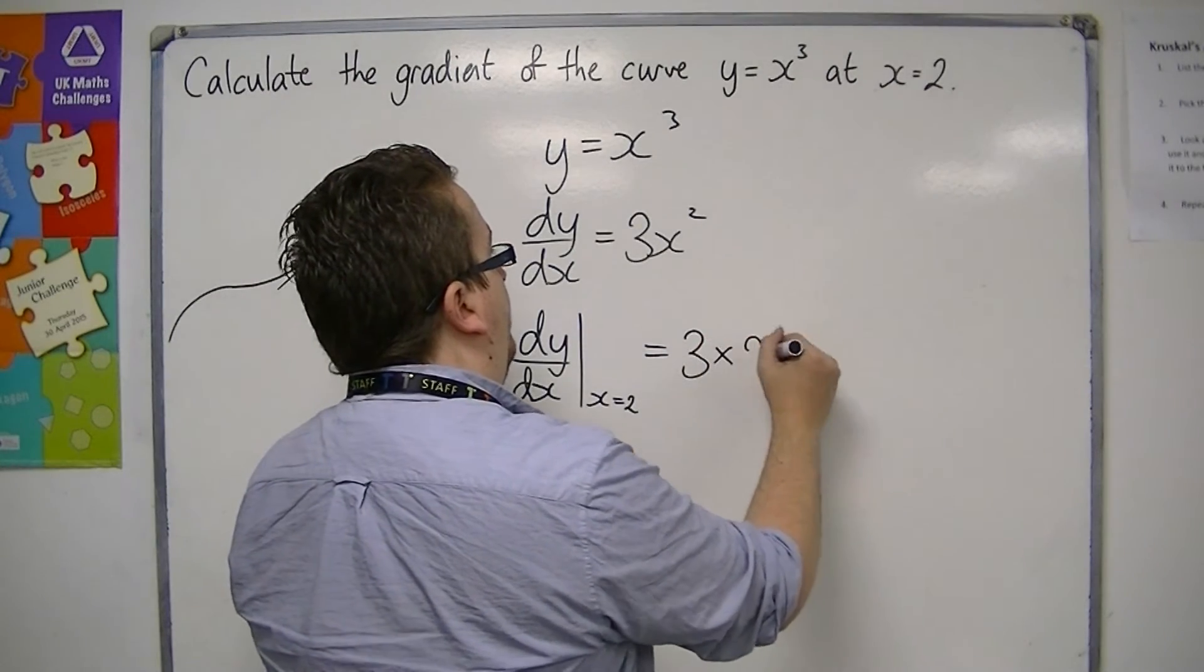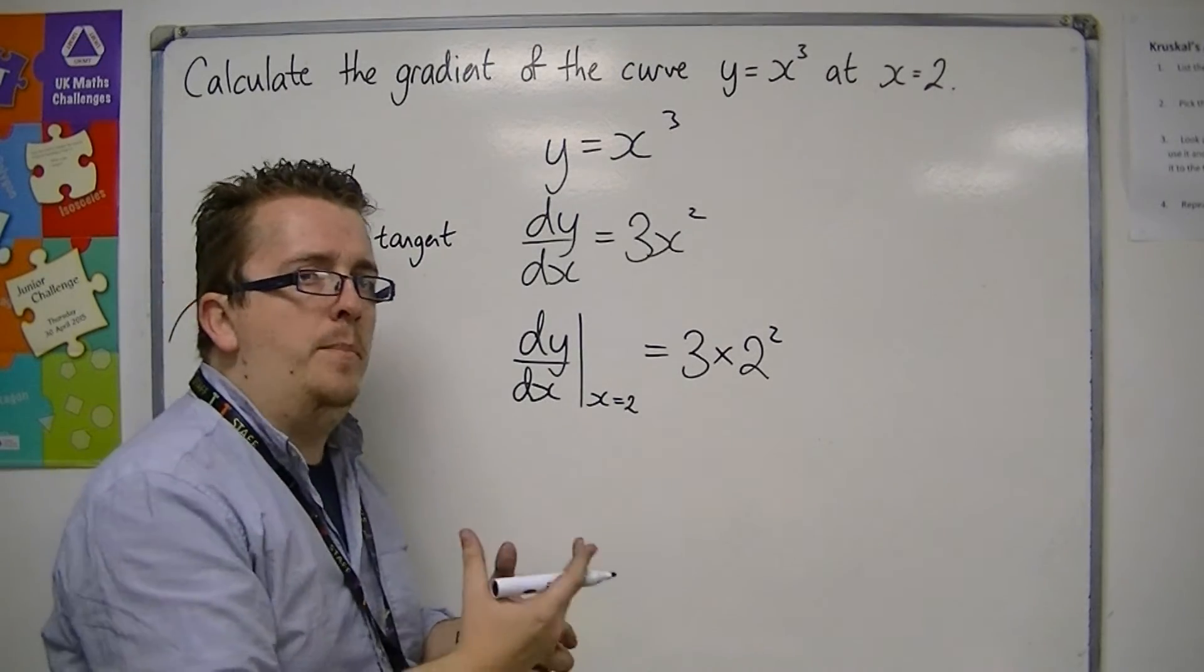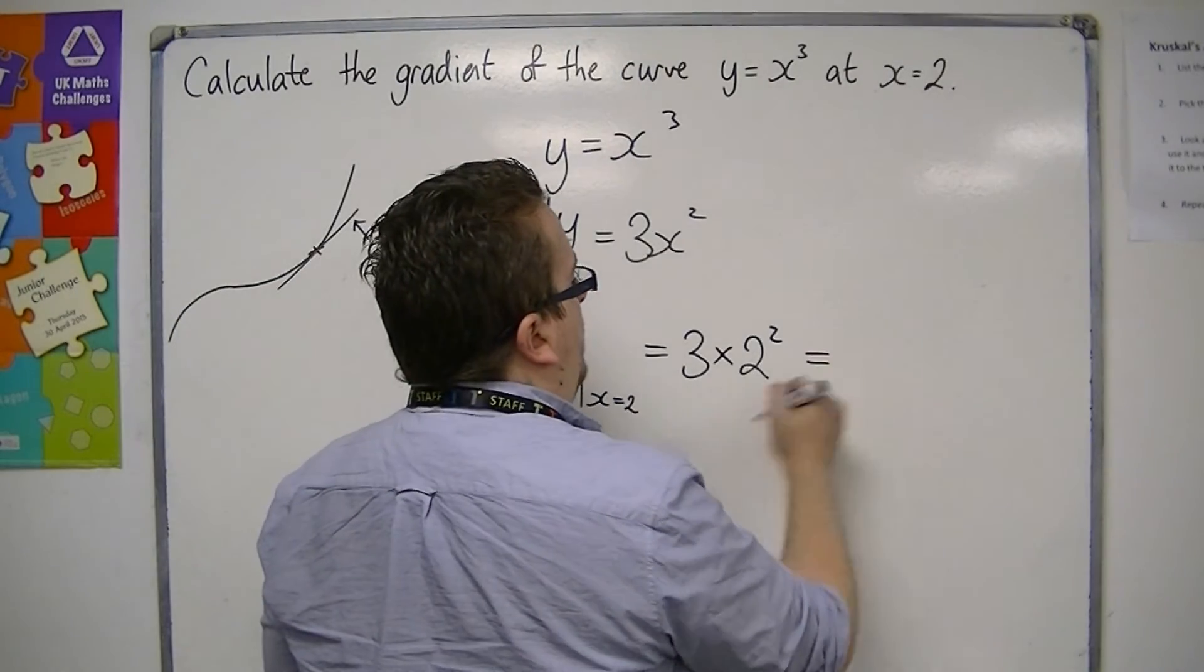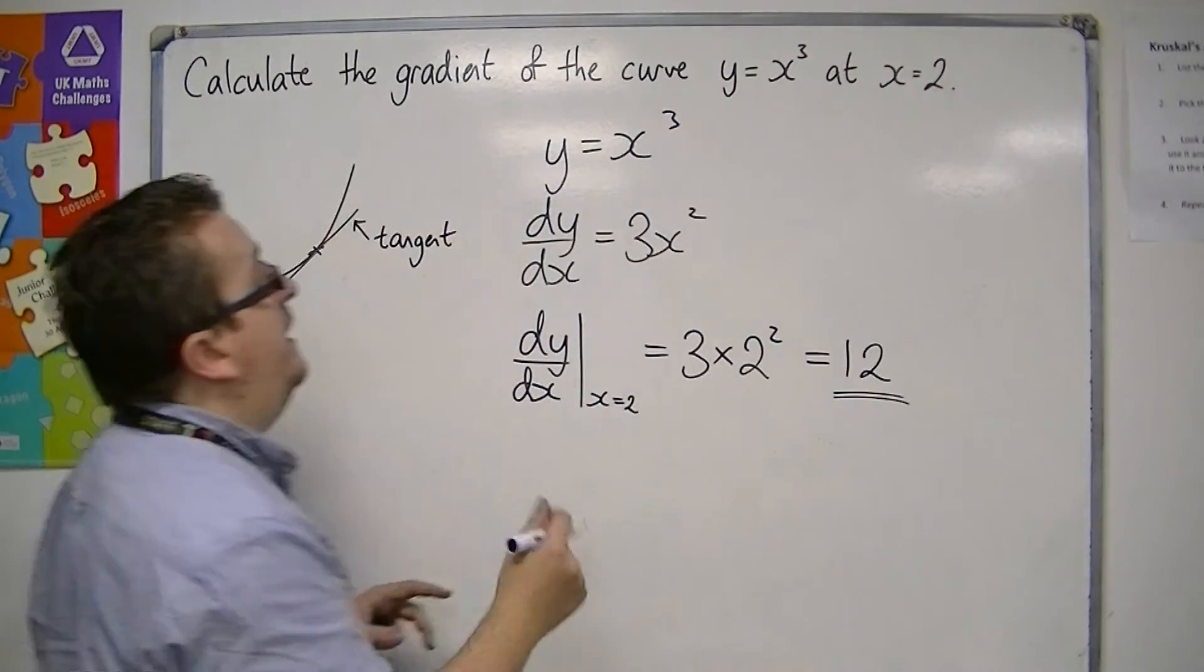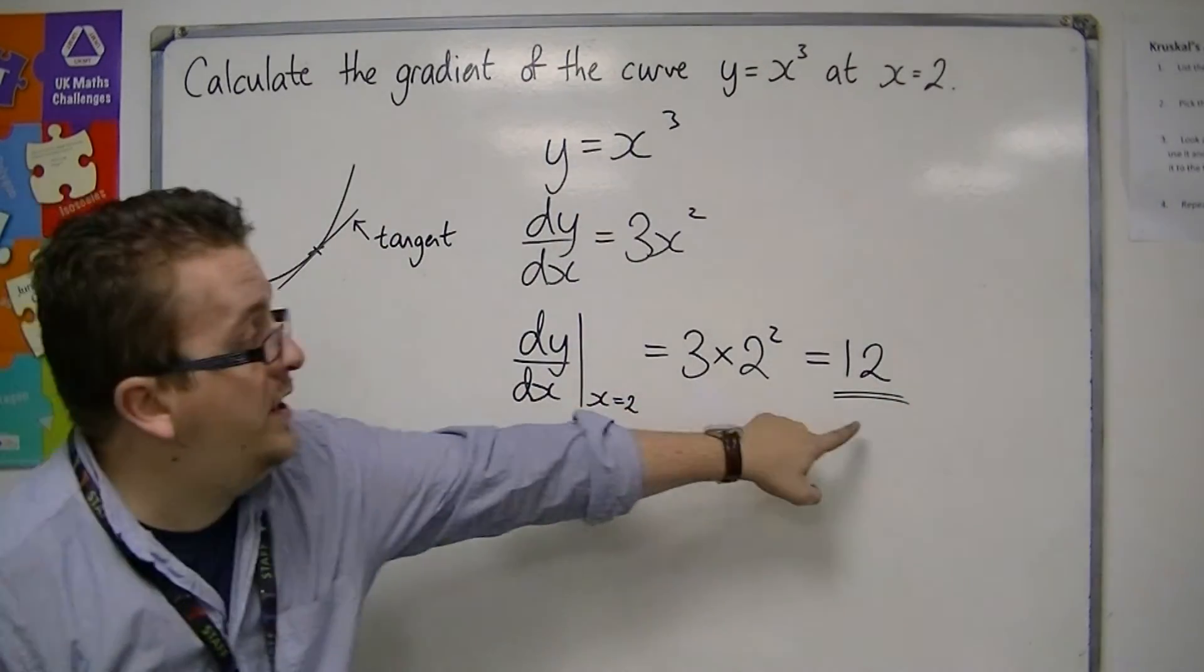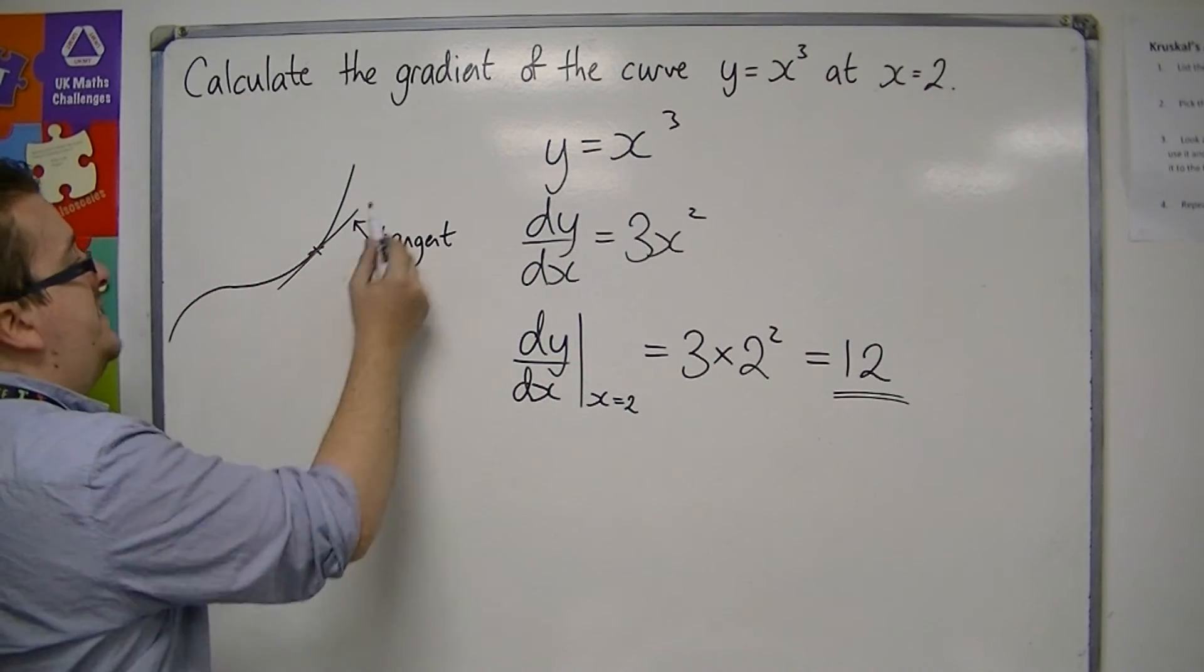So this is 3 lots of 2 squared. So you substitute the 2 into the dy by dx. So we get 3 lots of 4 is 12. So that is the gradient of the curve at x equals 2. It's the gradient of that tangent.